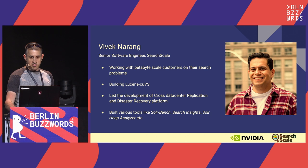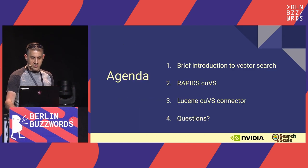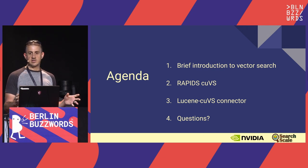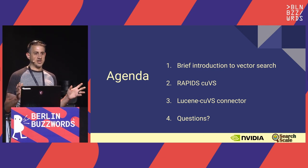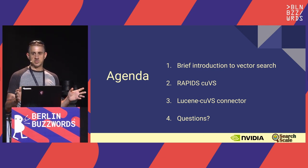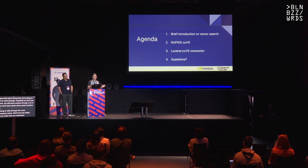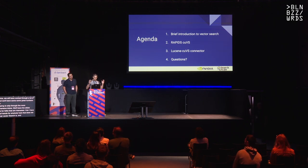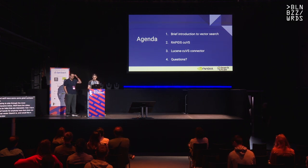I'm going to skip through the more comprehensive intros—we'll have the slides available for folks that are interested. Can I have a show of hands for anybody here that does not know what vector search is and would like a brief overview? It's a big topic today: RAG, generative AI, things have exploded, so vector search has really grown in importance.